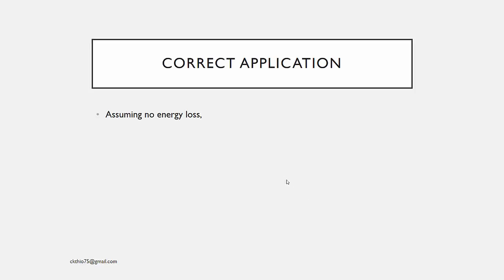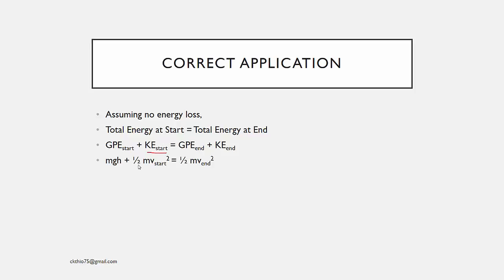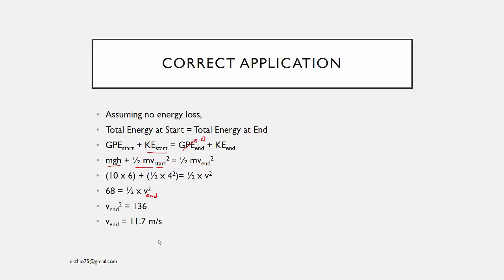The correct application, assuming no energy loss, is still: total energy at start equals total energy at end. However, in this case the kinetic energy at the start is no longer 0. So you put in the full formula: GPE plus KE at start equals GPE plus KE at end. The GPE at the bottom is 0, so substituting all values in, you find the ending velocity is about 11.7 meters per second.